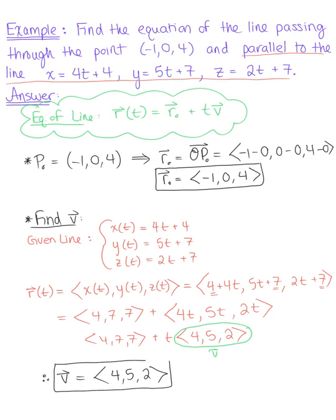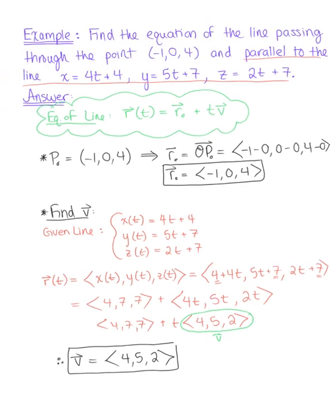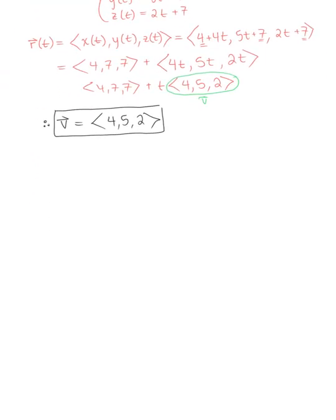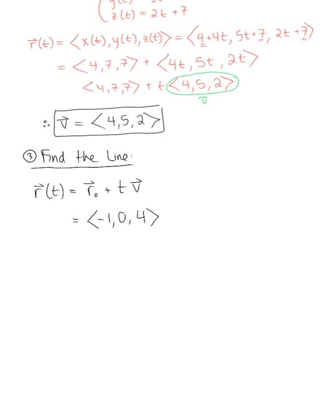And we are now ready to find the line. So again, we know our equation of the line is going to be defined as vector r(t) = r₀ + t times vector v. So plugging in what we just found, we have the position vector of our point, (-1, 0, 4), plus t multiplied by the parallel vector to the line, (4, 5, 2).